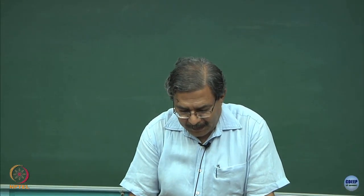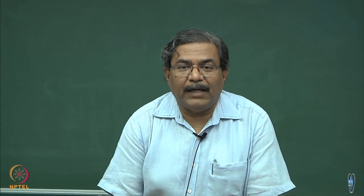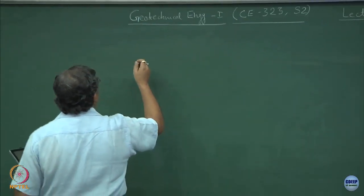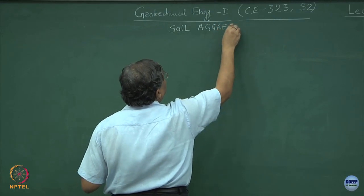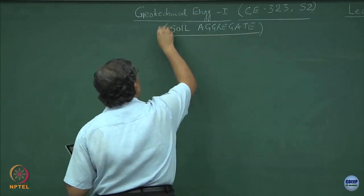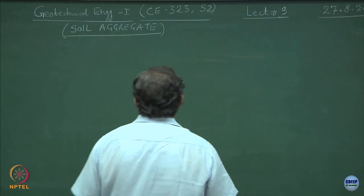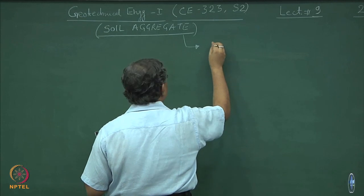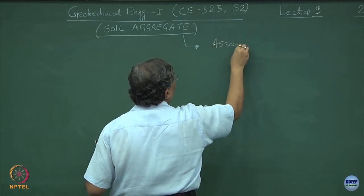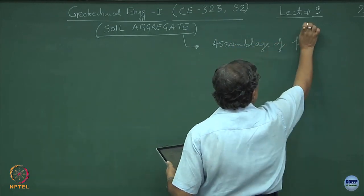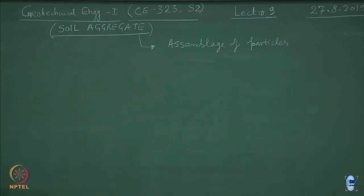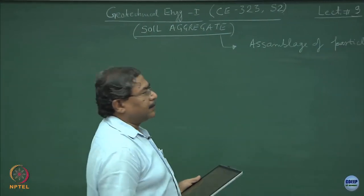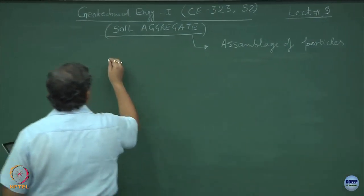Now I will start quantifying the soil matrix or soil aggregate. This is a new topic — soil aggregate — which basically defines the description of the assembly of particles. From this point onwards, the quantification of the soil matrix starts. We also call this as phase relations.